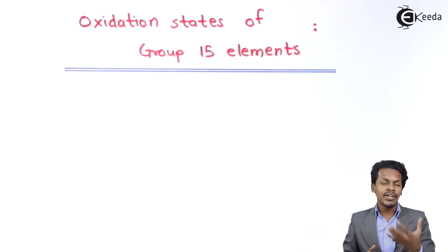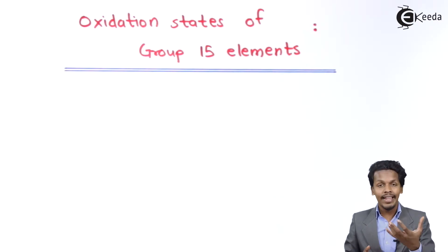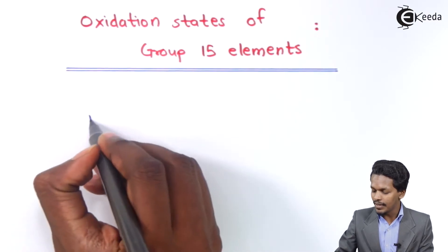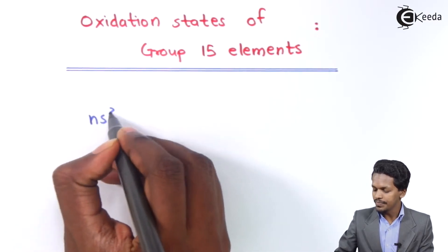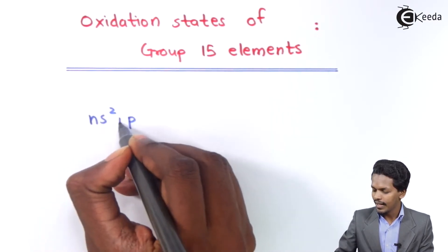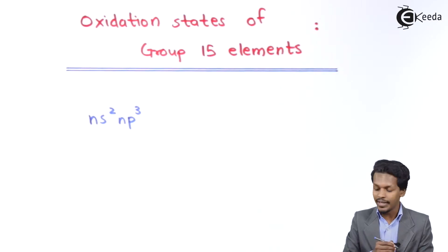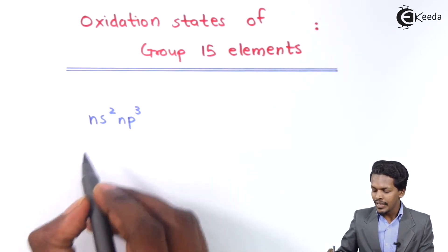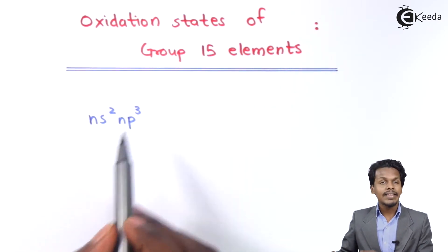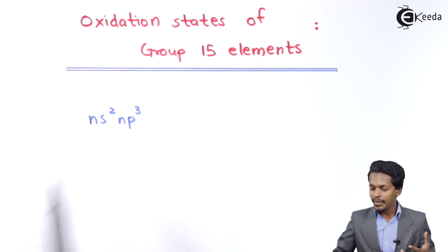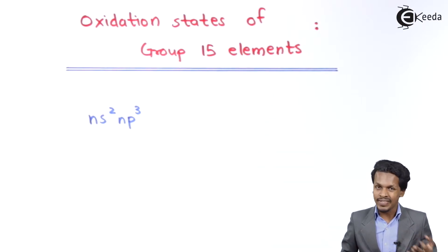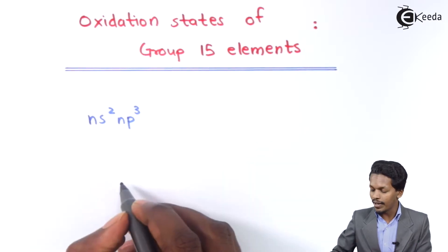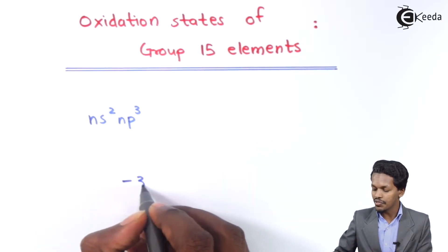The general electronic configuration for the valence shell of Group 15 elements is ns²np³. So in order to fulfill the p orbital, the element can gain 3 electrons, making the Group 15 element acquire a minus 3 oxidation state.